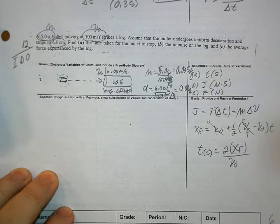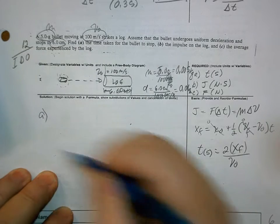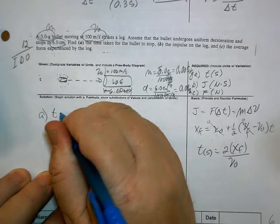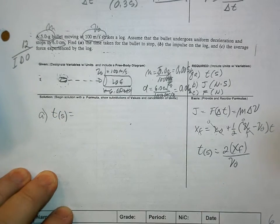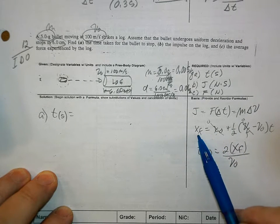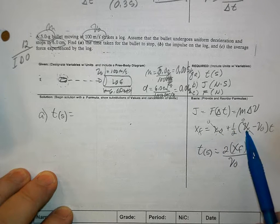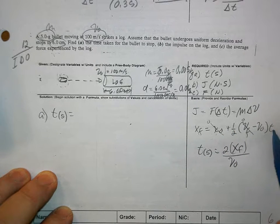Okay, solving this problem. First thing that we have to look for is time in seconds. And look, from module 3, we have this equation: XF is equal to XO plus one half VF minus VO times time.